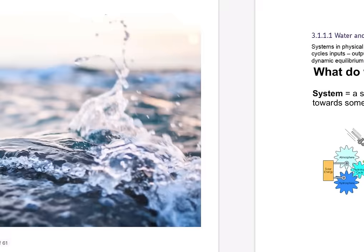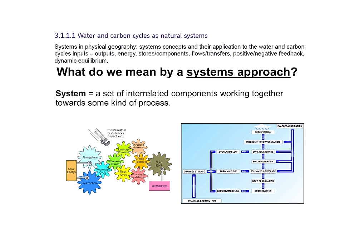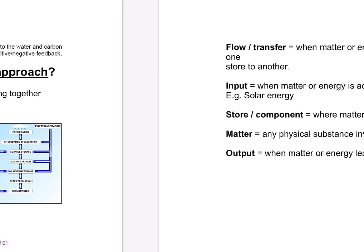If you're starting water and carbon, it's important you understand what a systems approach is. If you're using a systems approach, you can say this is a set of interrelated components that form a working unit — a bit like the diagram showing here, with lots of different cogs all working together.